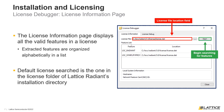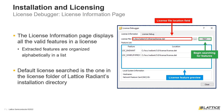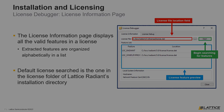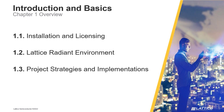This list can be seen in the Feature List area of the window. Once users are finished using the license debugging tool, they can close it using the Close button in the bottom right. That concludes this section of the introductory training series. To view the next video in the chapter, select the video titled Section 1.2: Lattice Radiant Environment.